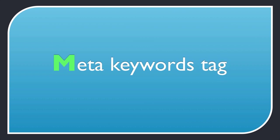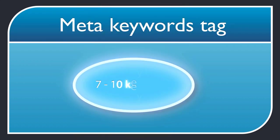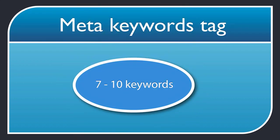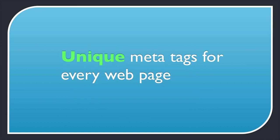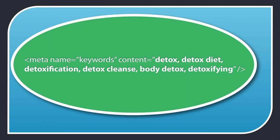Meta keyword tag. The meta keyword tag is not very important nowadays, so it's not really worth much of your time. I suggest you stick your primary and secondary keywords in there with a few variations — no more than 7 to 10 relevant keywords or you'll look like you're keyword stuffing. Make sure you have different meta keywords, and meta description for that matter, for every page you optimize. Here's what a good meta keyword tag looks like for Debbie's blog post.